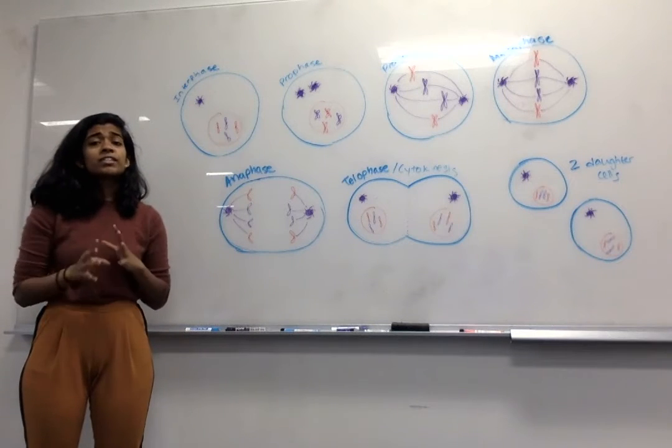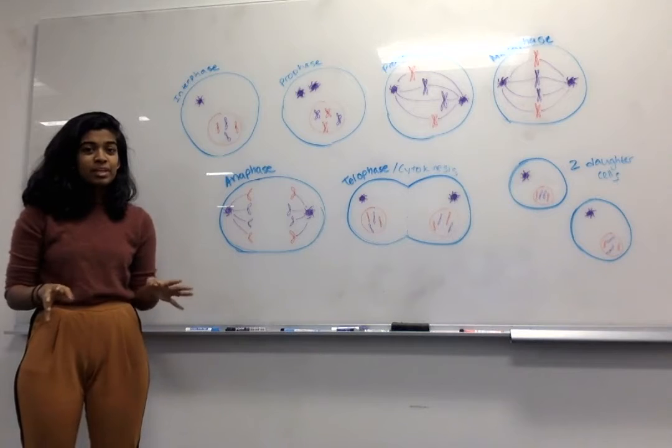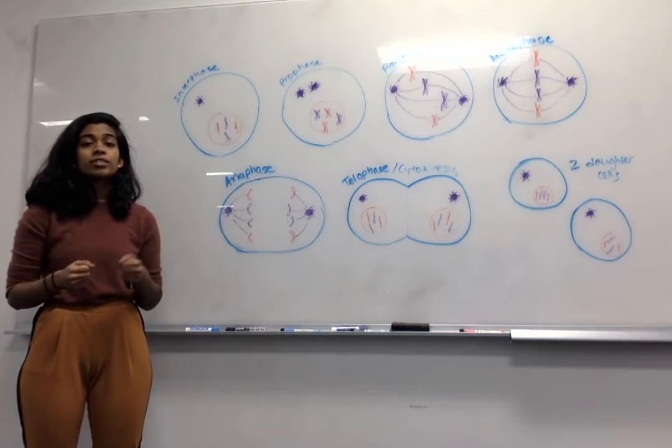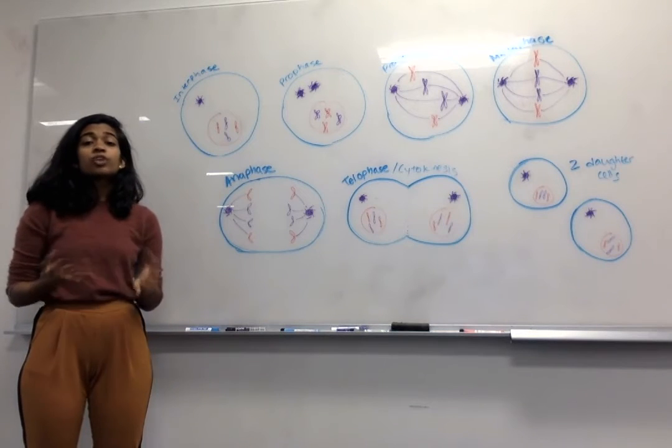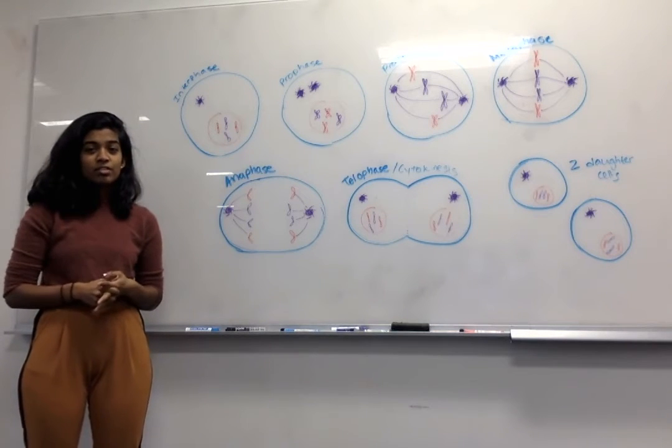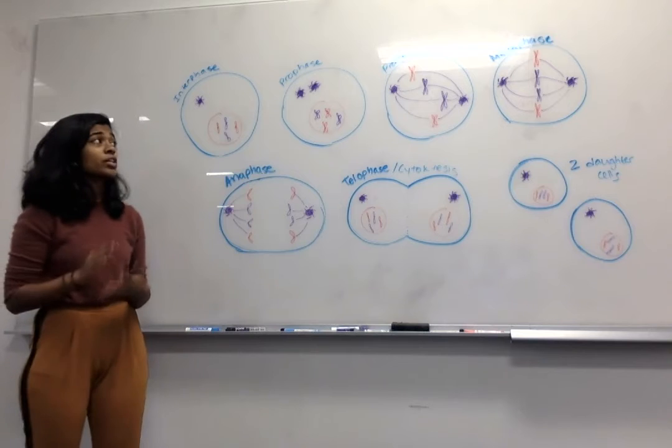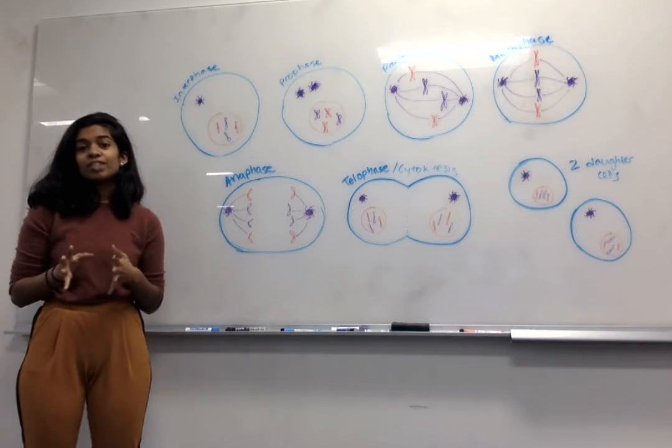The cell now checks that the chromosomes are at the metaphase plate, and that the microtubules are correctly attached to centromeres. This spindle checkpoint basically ensures that sister chromatids will split evenly between daughter cells, and the cycle actually stalls until they confirm that this alignment is correct.